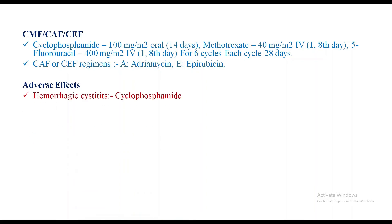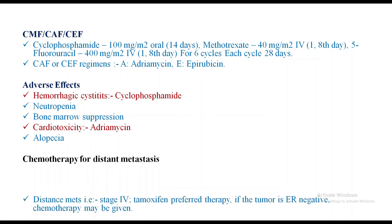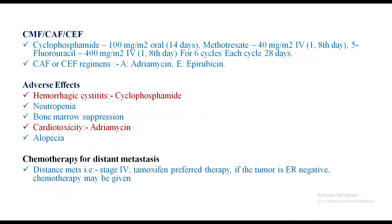Adverse effects of chemotherapy: hemorrhagic cystitis is mainly associated with cyclophosphamide, neutropenia, bone marrow suppression, cardiotoxicity specially associated with Adriamycin, and alopecia. For distant metastasis — stage 4 — Tamoxifen is the preferred therapy. If the tumor is ER negative, chemotherapy may be given. If receptor positive, Tamoxifen should be given; if receptor negative, chemotherapy may be given.